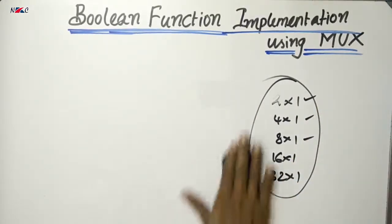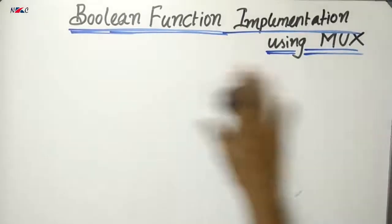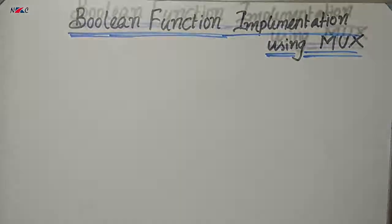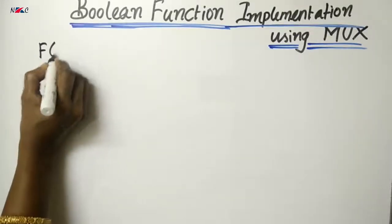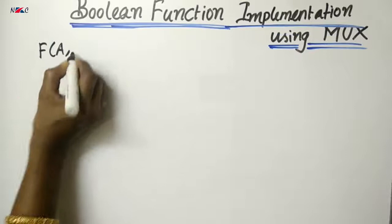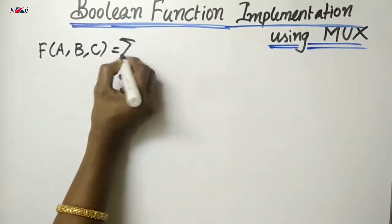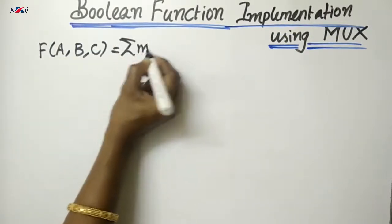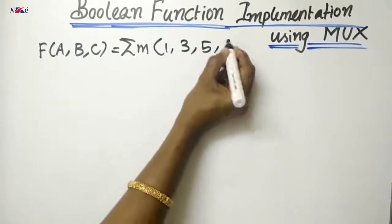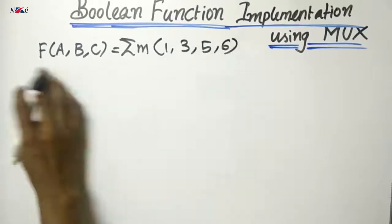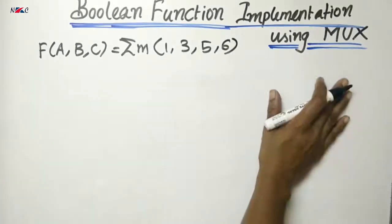Let's consider an example of how we will implement a boolean function using a multiplexer. f(a, b, c) = Σm(1, 3, 5, 6). Implement this function using a multiplexer.